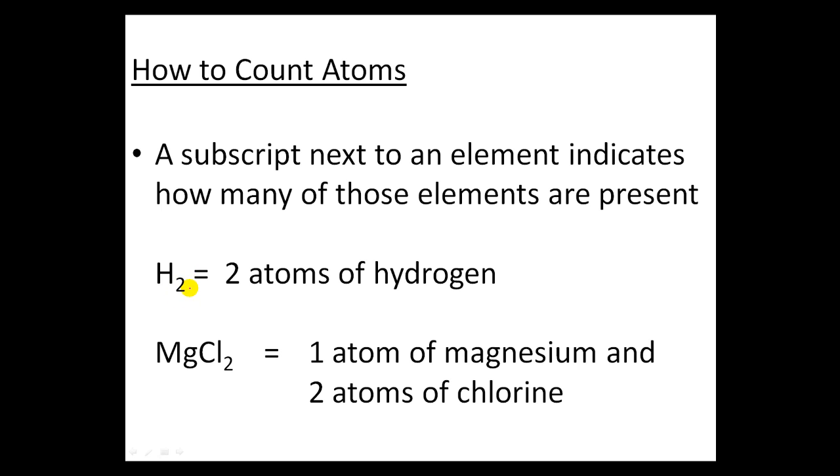The number underneath is called a subscript - like a subway or submarine, it means underneath. A subscript next to an element indicates how many of those elements are present. So this 2 next to H indicates there are two atoms of hydrogen. Mg has no number so we assume it's just 1, so there's one atom of magnesium and since there's a 2 here, two atoms of chlorine.